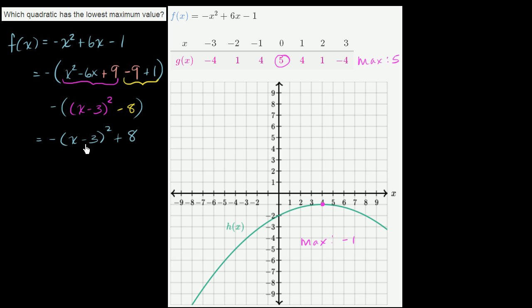If x is anything other than 3, this part of the expression is going to be positive. But then you have a minus sign, so you're going to subtract that positive value from 8. So this actually has a maximum value when this first term is 0.